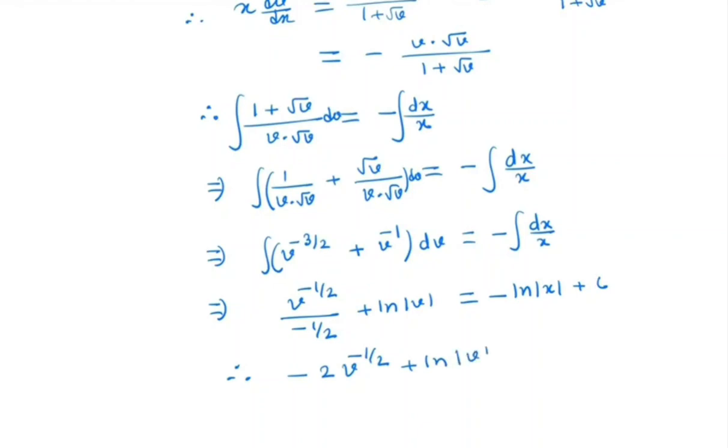Substituting back v equals y/x, we have negative 2 root(y/x) plus ln(y/x) equals negative ln x plus c, which is the general solution.